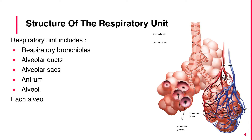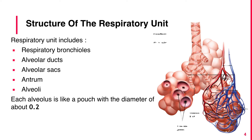Each alveolus is like a pouch with a diameter of about 0.2 to 0.5 mm. It is lined by epithelial cells.